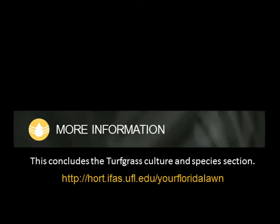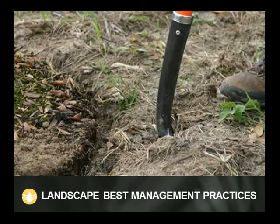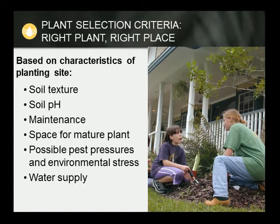This concludes the Turfgrass culture and species section. For more information, please visit hort.ifas.ufl.edu/your-Florida-lawn. Next, we will discuss ornamental plants in the landscape. Many of the plants used in Florida vary widely in their adaptation — choose grasses and other plants that are suited to the particular environment. The long-term value of a landscape depends on how well it performs for its particular objectives. Therefore, the first step in selecting plants for a landscape is to conduct a site evaluation, which may consist of studying planting site characteristics such as the amount of sun or shade, salt spray exposure, soil type, pH, degree of soil compaction, slope, and water drainage. These characteristics will most likely differ between areas on the same property.